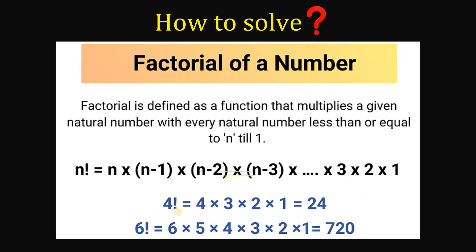For example, 4 factorial equals 4 × 3 × 2 × 1, which is 24. Also, 6 factorial is 6 × 5 × 4 × 3 × 2 × 1, which equals 720. We will use this concept to answer this question.